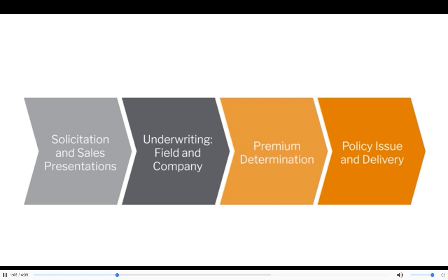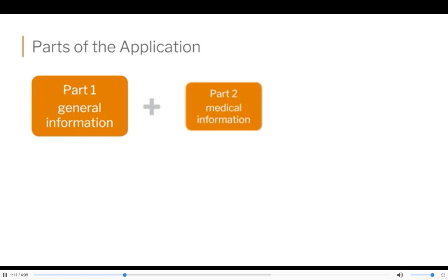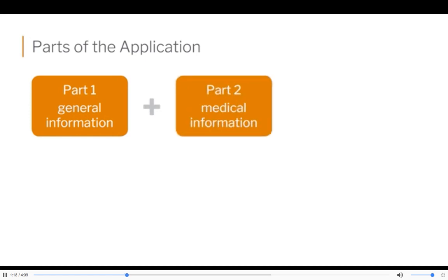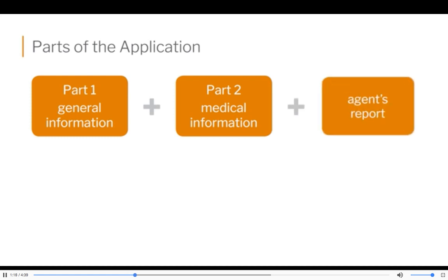Let's talk about the parts of an application. Part 1 are the general questions on an application. The Part 2 section is always the section about your health history and medical questions. And the third piece of documentation is called the agent's report. You complete this letting the underwriter know any pertinent information or observations that you have about the proposed insured.